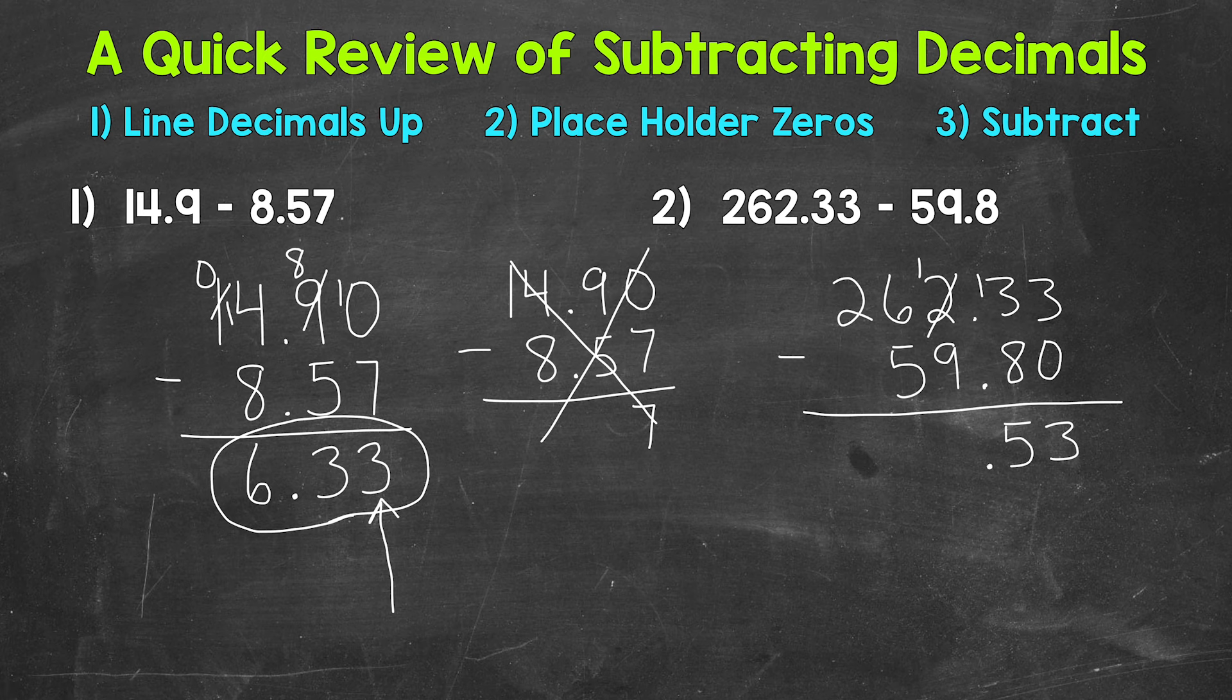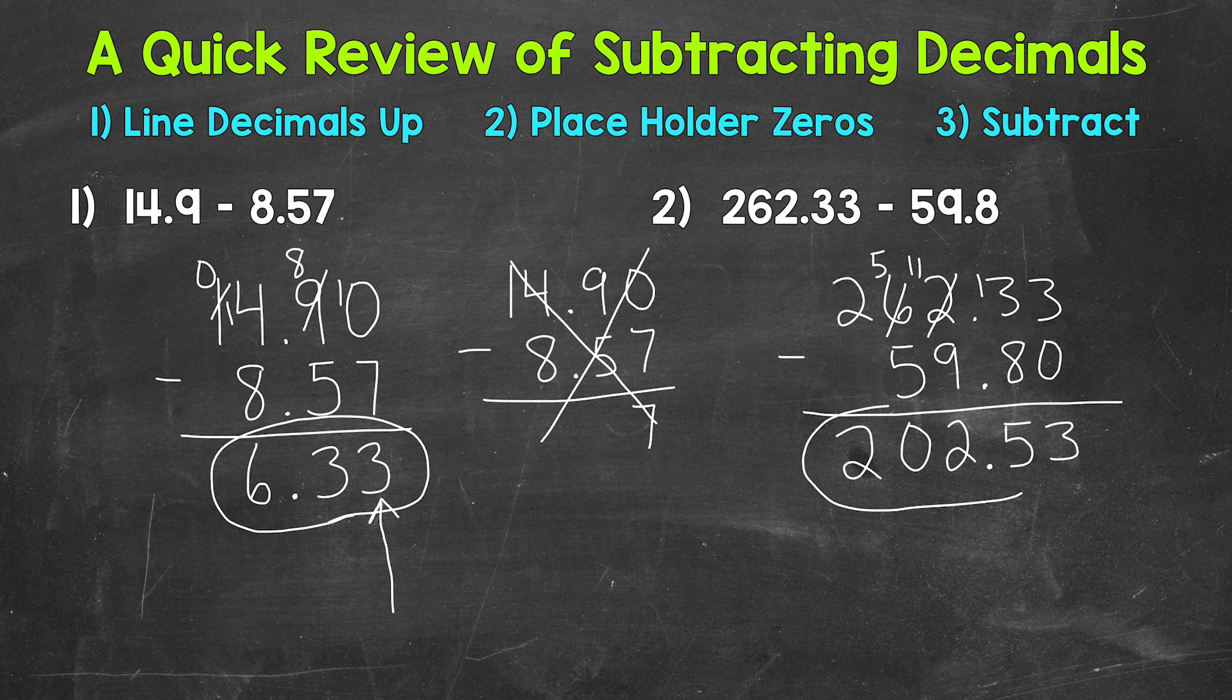And now we have the ones place. So 1 minus 9, we need to borrow. So we'll borrow from the 6. And we have 11 minus 9, which is 2. Then for the tens place, we have 5 minus 5, which is 0. And then lastly, we have the hundreds place where we have 2 minus nothing under it. So it's just 2 minus 0, which is 2. And our final answer, 202 and 53 hundredths.